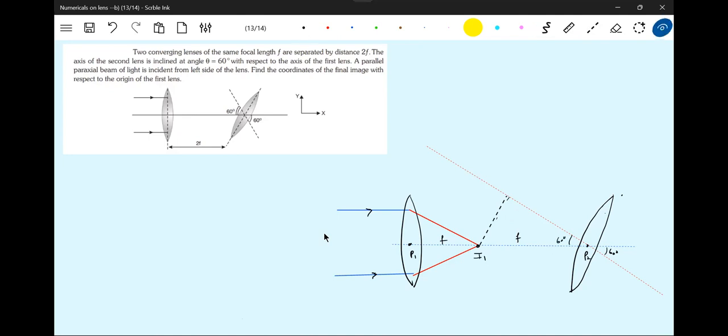This is 60 degrees. This I1 will become object for the second lens. This is lens 1. They will converge on the axis of this.